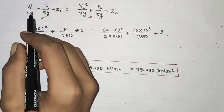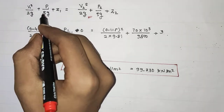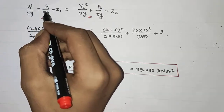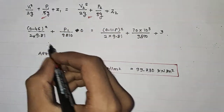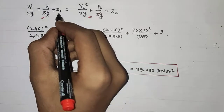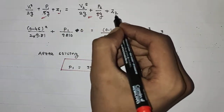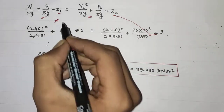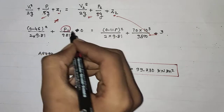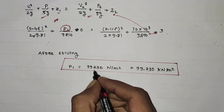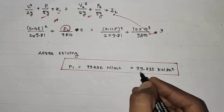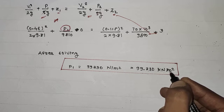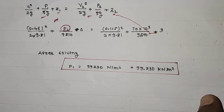Putting in the values of velocity, gravity, and density — since the same fluid flows from lower to upper side, density cancels out. The datum height is 0 at the lower surface and 3 at the upper surface. Substituting all values into the Bernoulli's equation gives P1 = 99,330 N/m² = 99.330 kN/m². This is the pressure at the lower end required to maintain the flow.